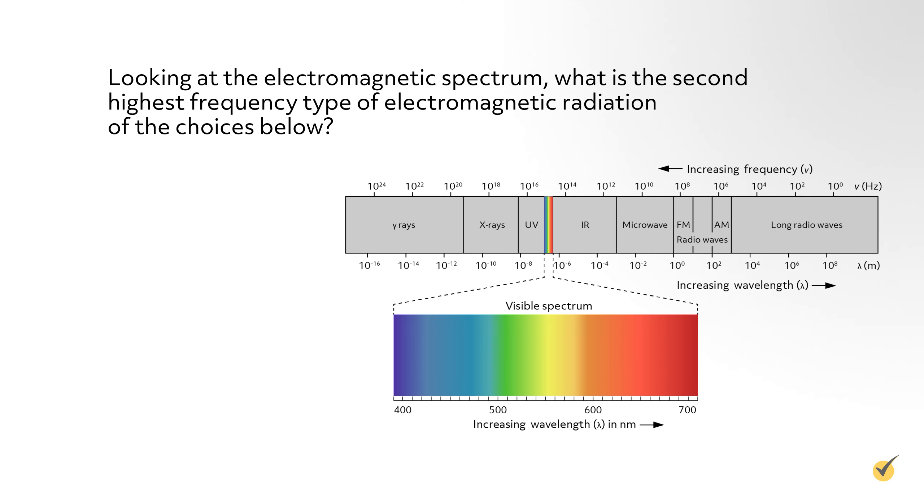Now that we've discussed the properties of light, let's test our knowledge with a couple of questions. Number one, looking at the electromagnetic spectrum, what is the second highest frequency type of electromagnetic radiation of the choices below? A blue light, B yellow light, C x-rays, or D AM radio waves? The correct answer is A, blue light. Of the options given, the frequencies in decreasing order would be x-rays, blue light, yellow light, and then AM radio waves.